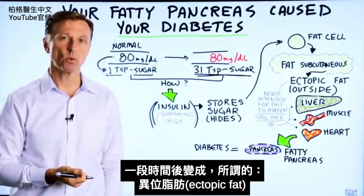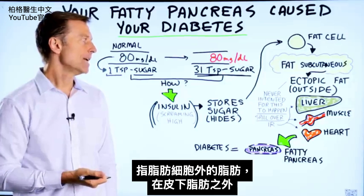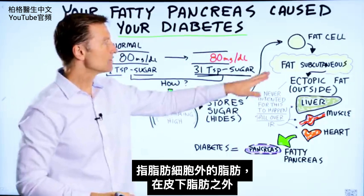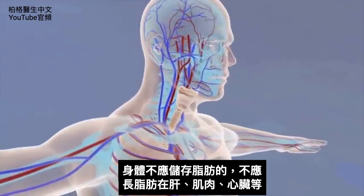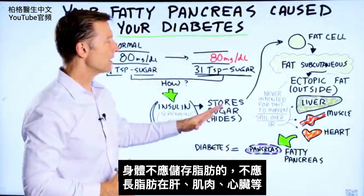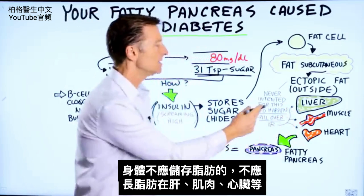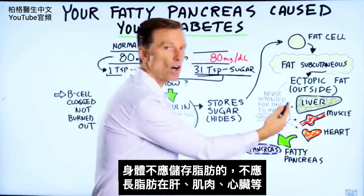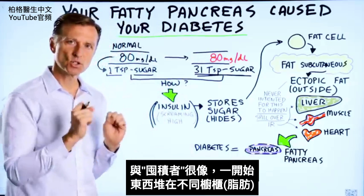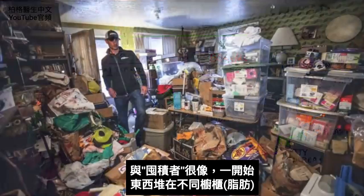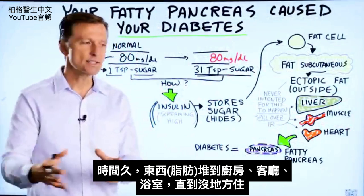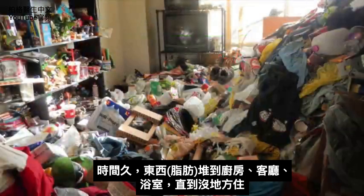Then what happens — you start developing what's called ectopic fat. Ectopic fat is the fat outside the fat cell, outside the subcutaneous fat, and your body was never designed for this to happen. We're talking about fat being stored in the liver, then in the muscles, then in the heart. It's very similar to a hoarder who is first storing stuff in different cabinetry, but over time things start building up in the kitchen, the living room, the bathroom.